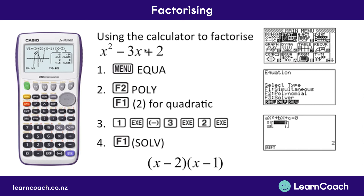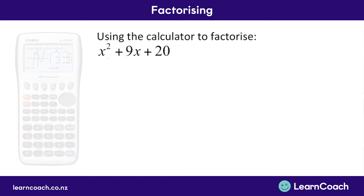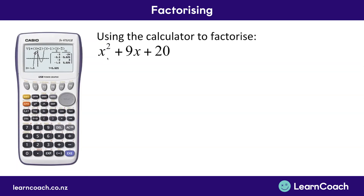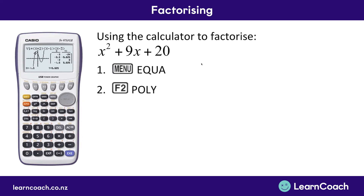This is great because not only can you solve with crazy numbers like 756, but you can also factorize really easily. Let's look at another question: x squared plus 9x plus 20. First press the menu button, then press equation, and remember you're solving a polynomial equation — not simultaneous, not solver. It's polynomial.